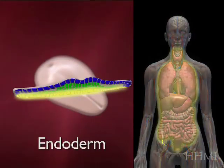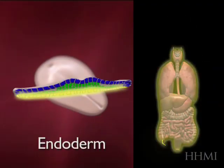And the endoderm gives rise to the whole gut tube. There you see the lung, the liver, the intestine.